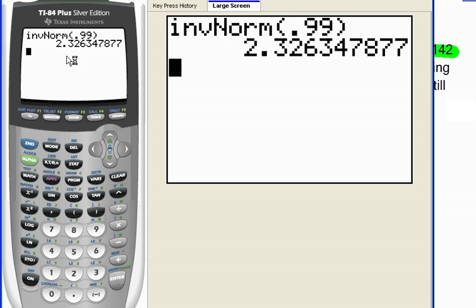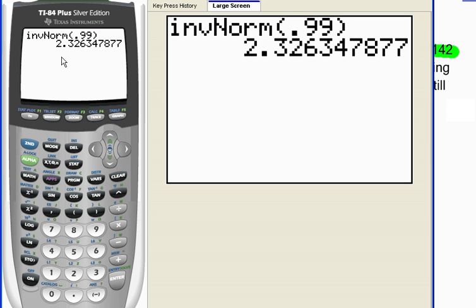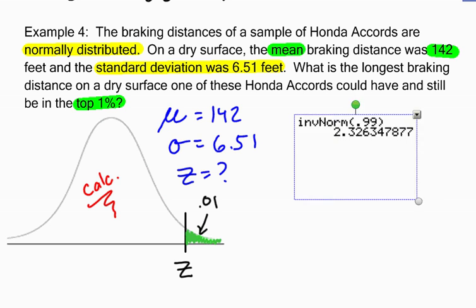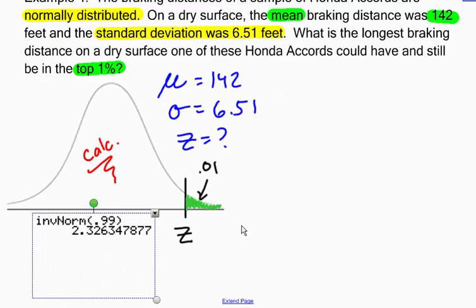When I hit enter, here is my z-score value. So this z-score that cuts off the top 1% is a z-score of 2.33. I'll round off to two decimal places.